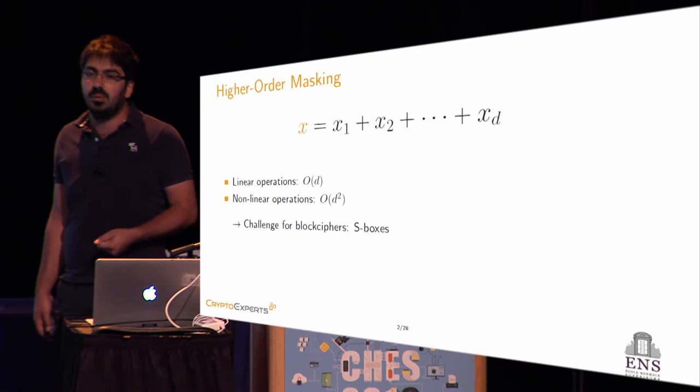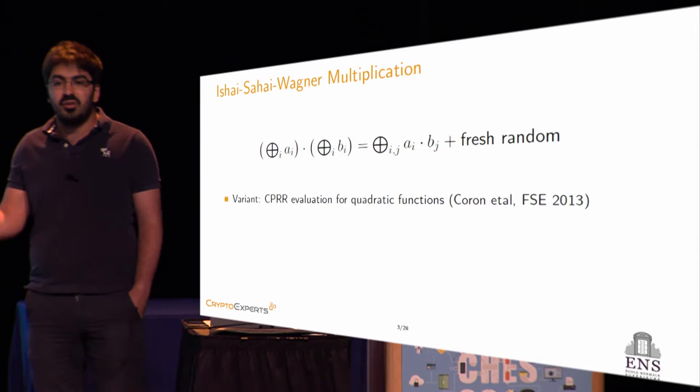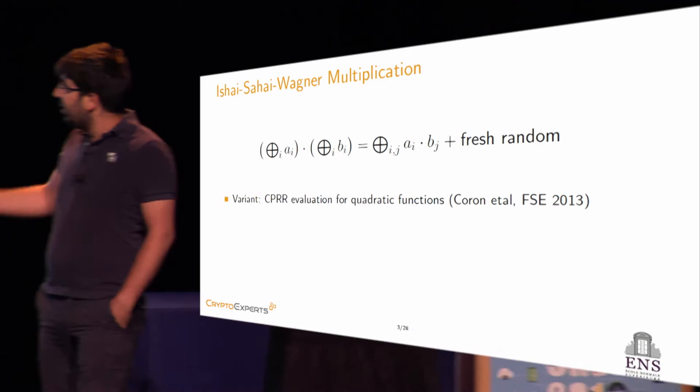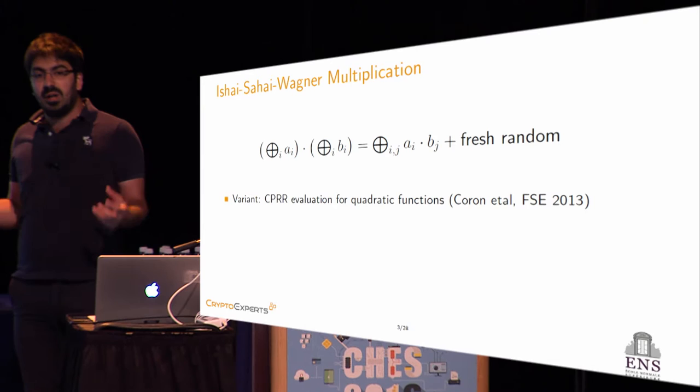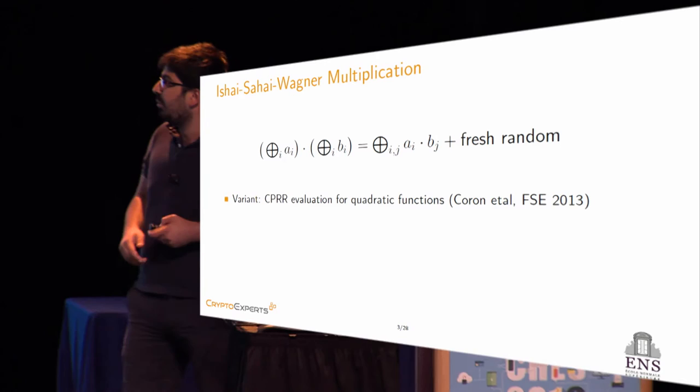In 2003 at Crypto, Ishai, Sahai and Wagner proposed a scheme to perform secure multiplication between two masked variables. It simply consists in adding fresh randomness to the D-squared cross-products in such a way that when we recombine the D output shares, we get the correct output, namely A times B.